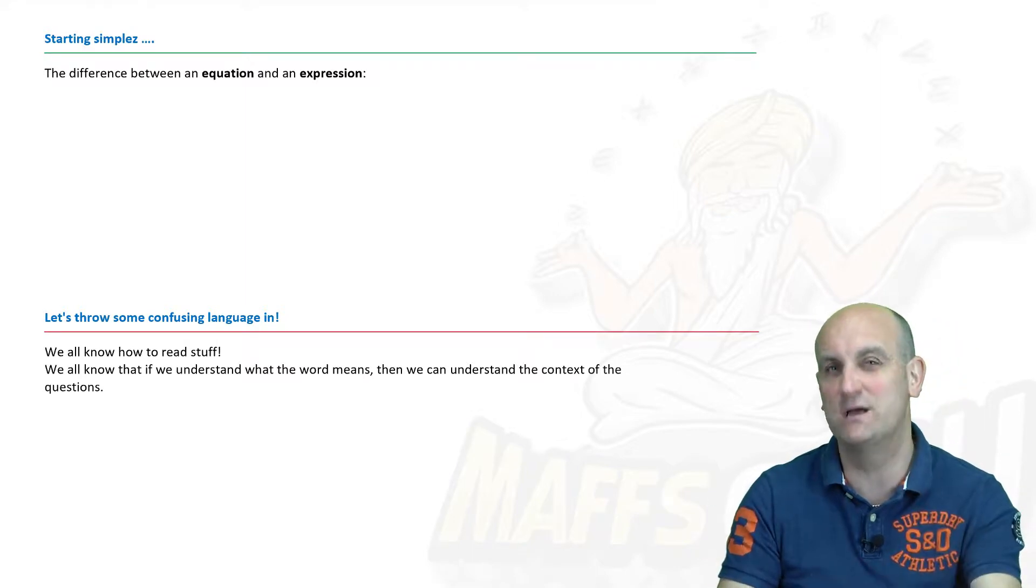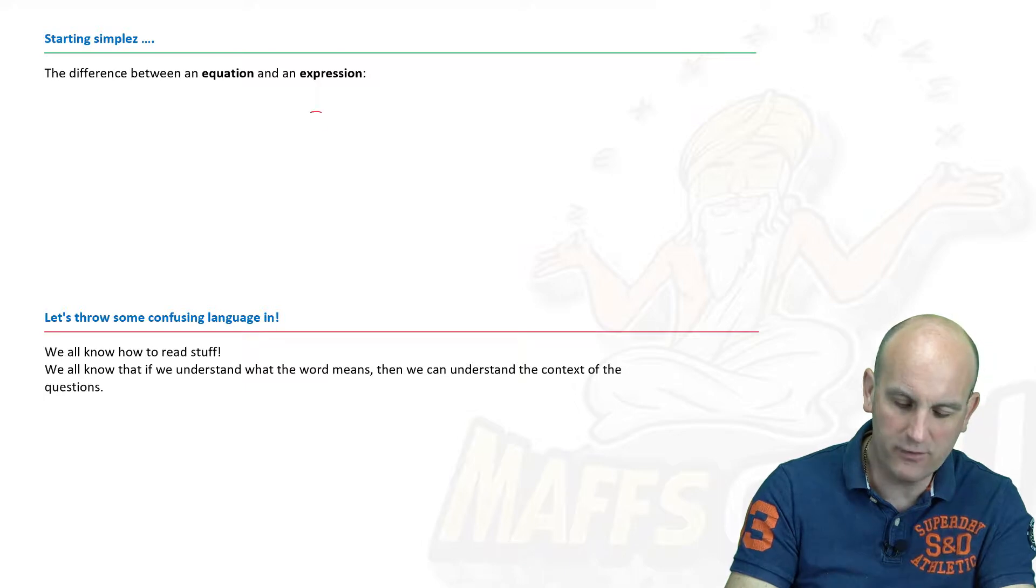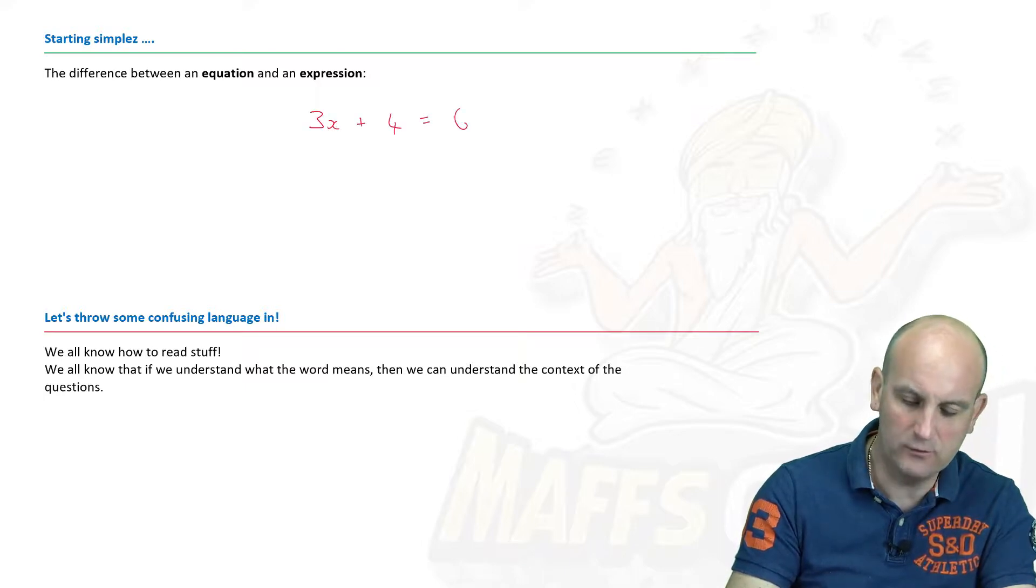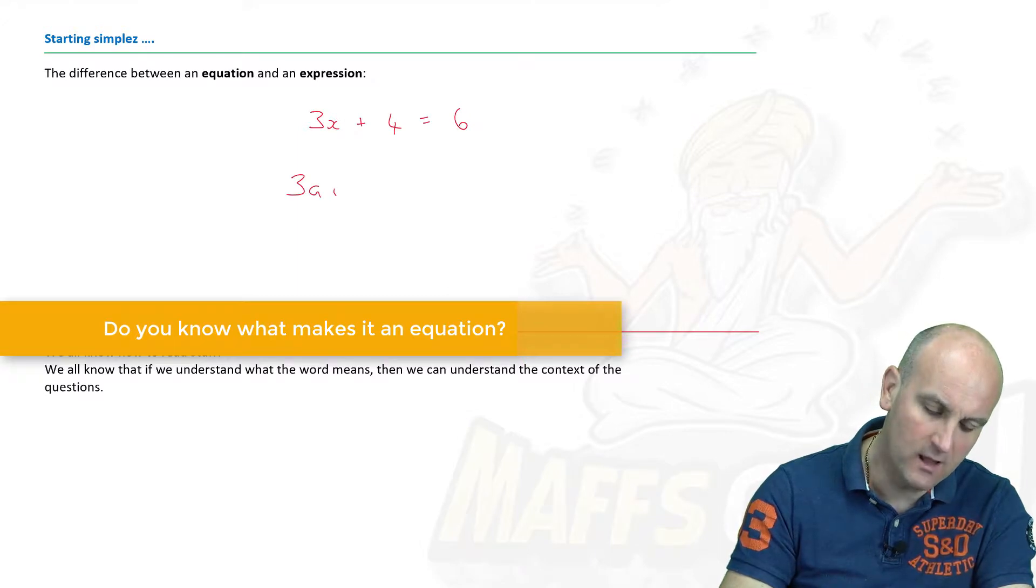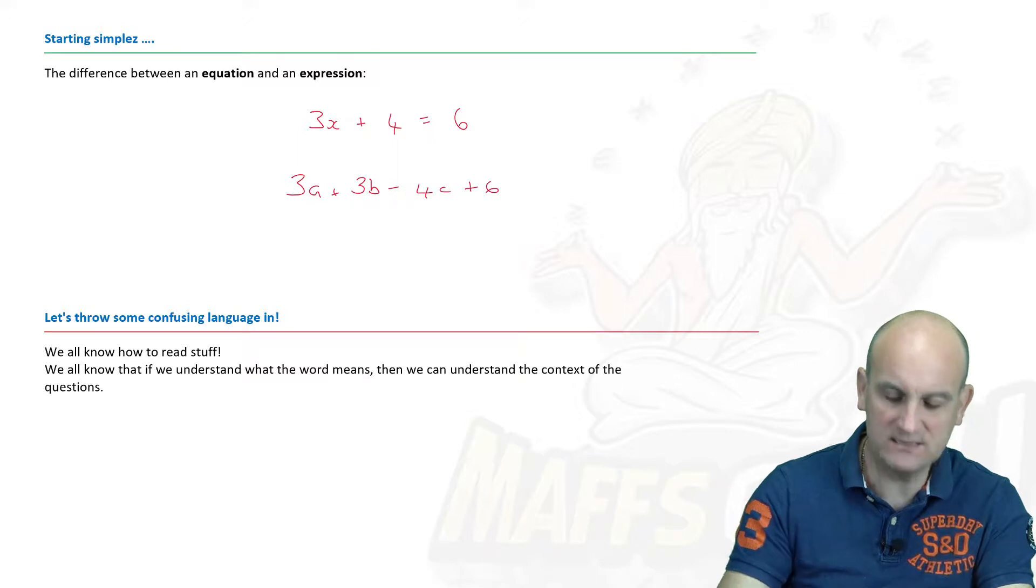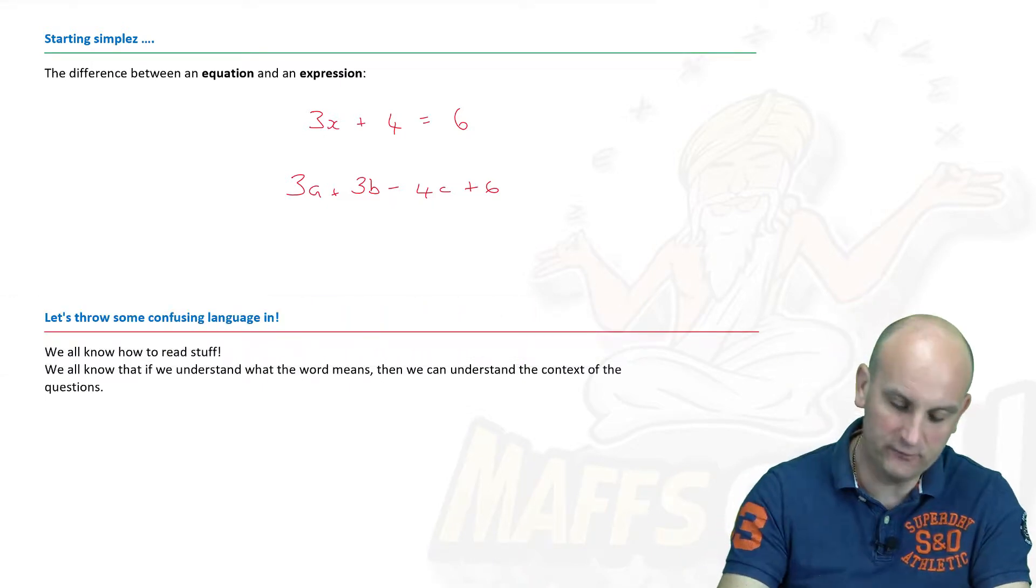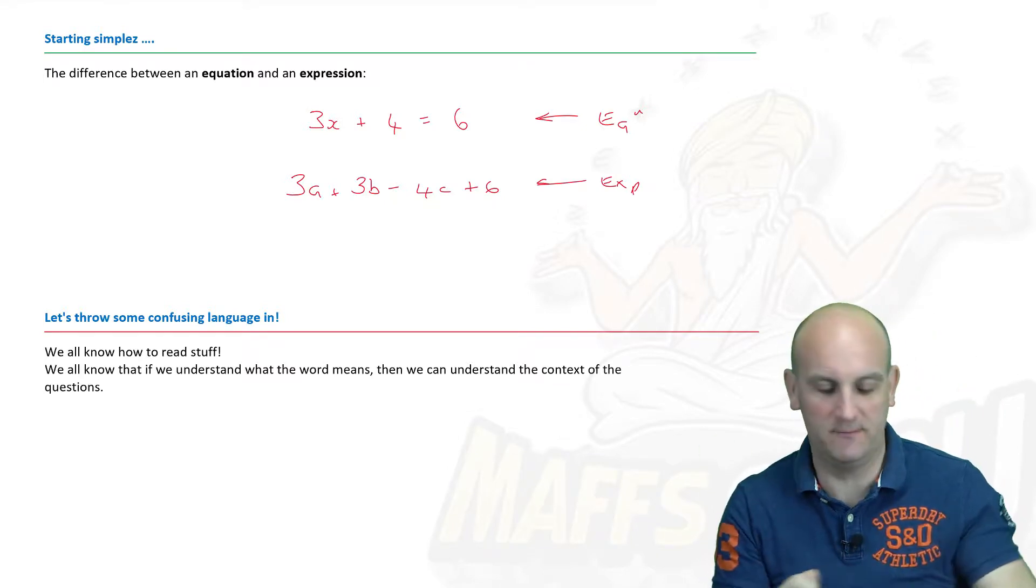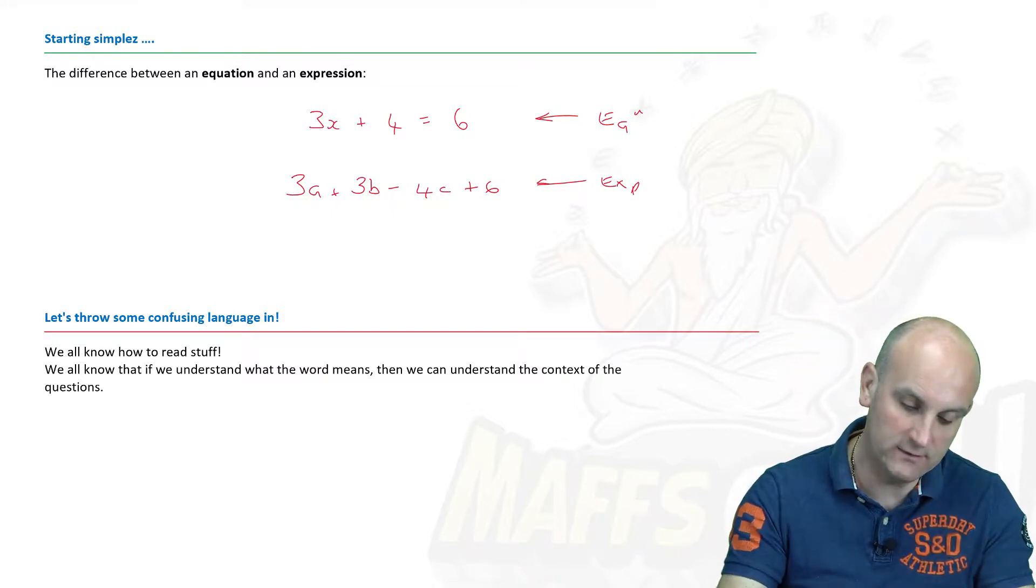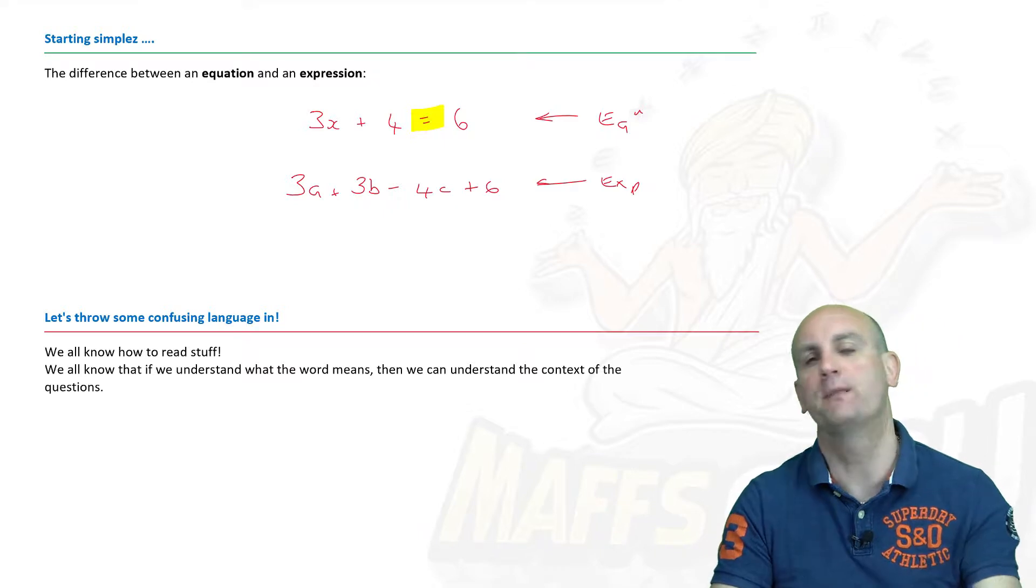Let's write down. I'm gonna do that by example. What is an equation? Well, let's write down something that's an equation. 3x plus 4 equals 6. And that, ladies and gentlemen, is an equation. I'm now gonna write down an expression. 3a plus 3b minus 4c plus 6. And I stopped talking there. Do you see the difference between an equation and an expression? The important thing to notice is the difference between an equation and an expression is that equal sign. When you see an equals, then you have an equation. Without that equals, you have an expression.